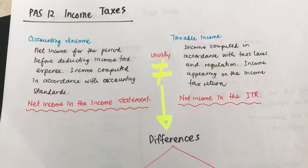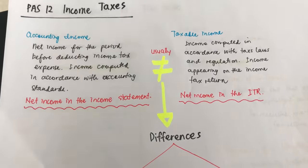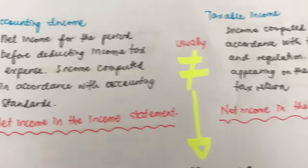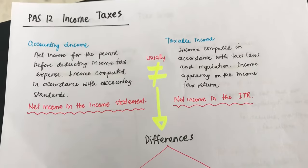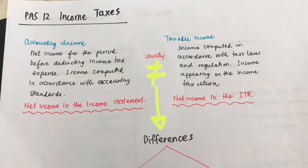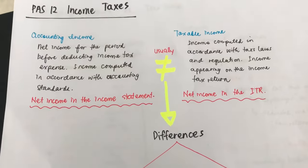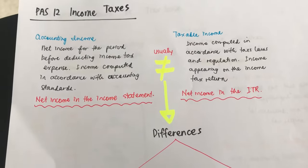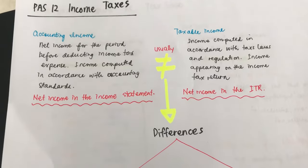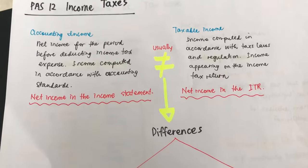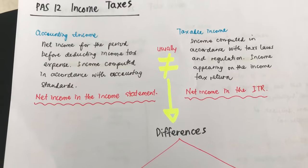We have two kinds of income: accounting income and taxable income. What usually happens is they are not equal with each other — if they were the same, there would be nothing to discuss. So what we want to learn today is how accounting income differs from taxable income, and how we account for, record, and report those differences in the financial statements.